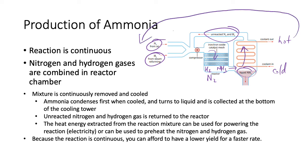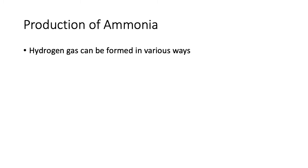In terms of green chemistry principles, the hot output can be used to preheat the incoming N2 and H2, or alternatively used to generate electricity to power the station. You could also be linking to acid-base topics by discussing how ammonia is basic, or to redox by showing that this is a redox reaction.